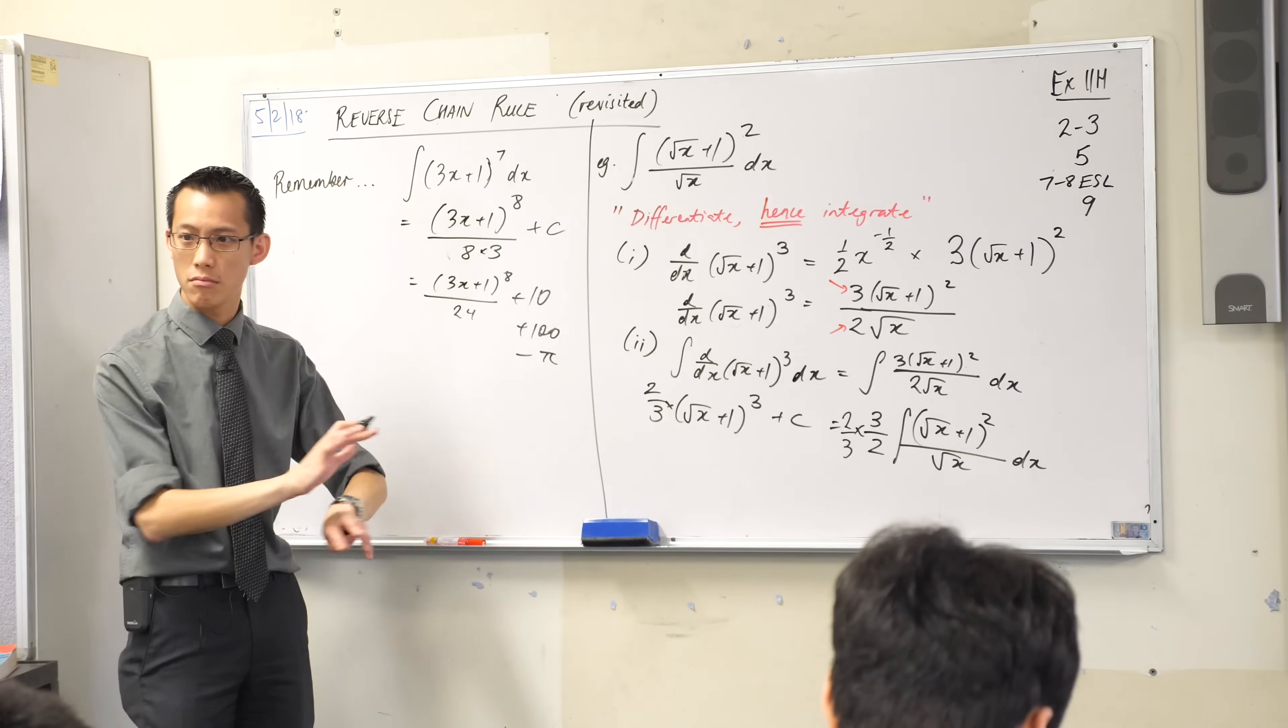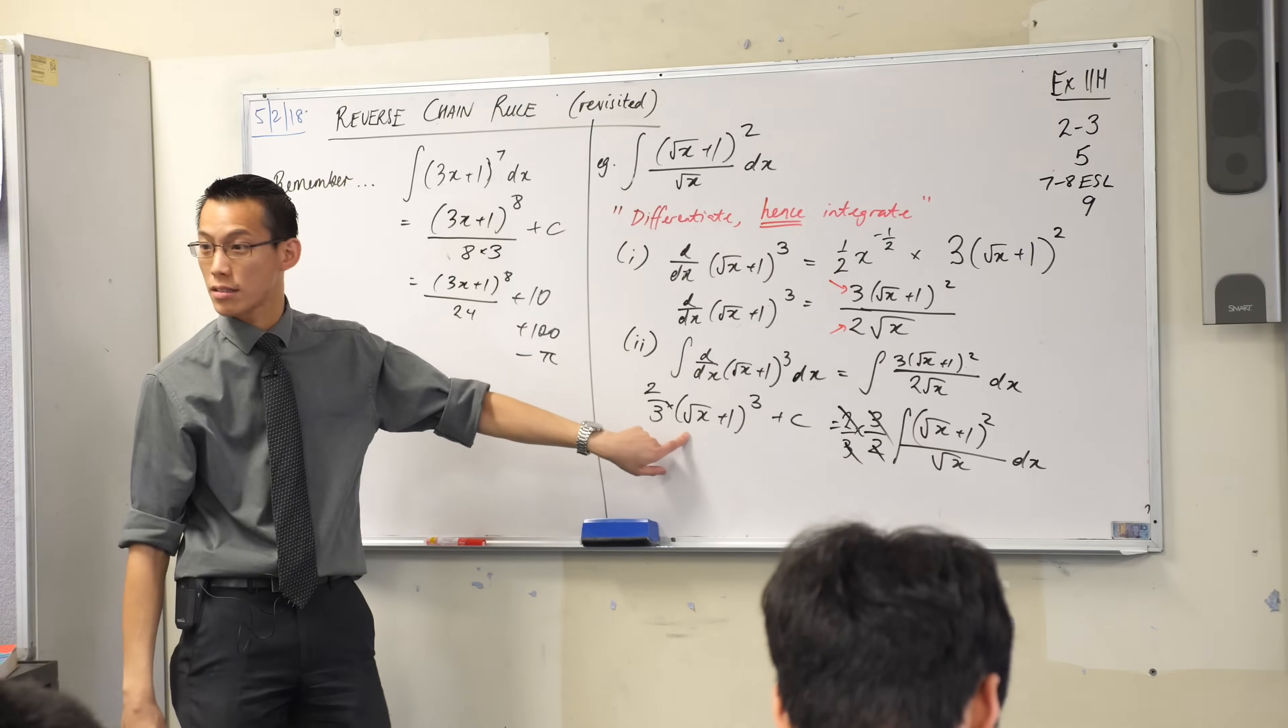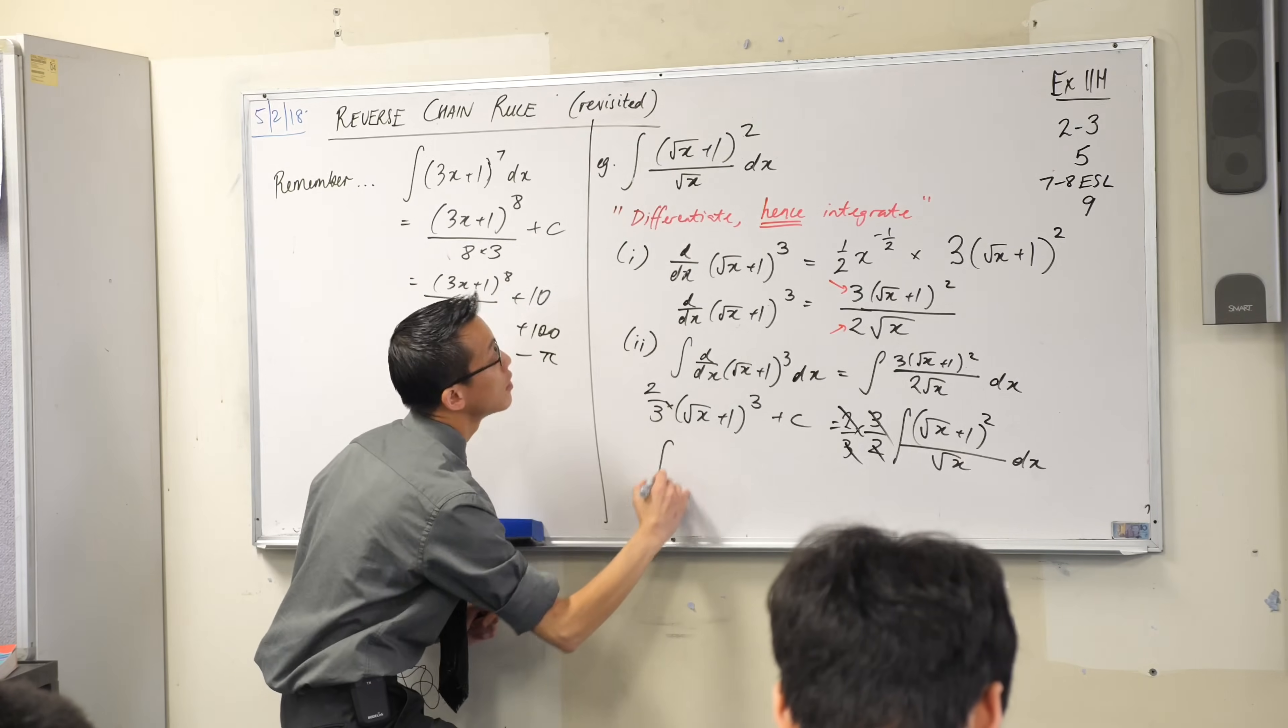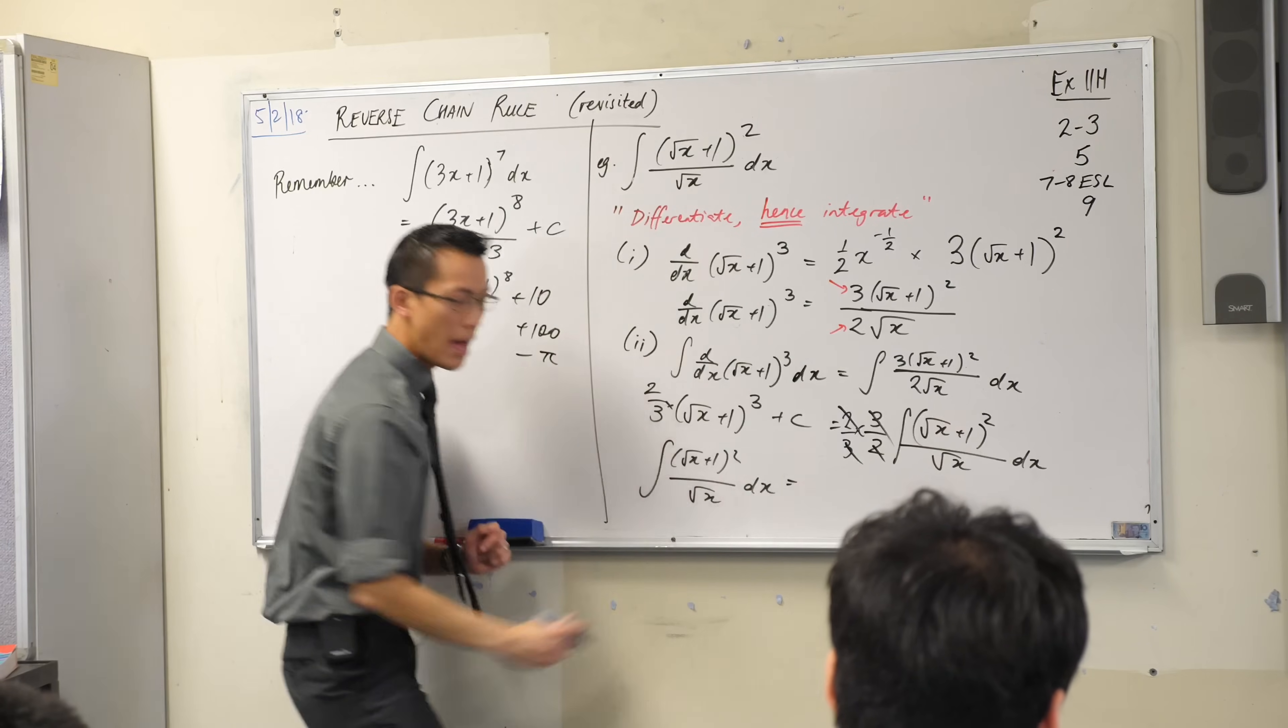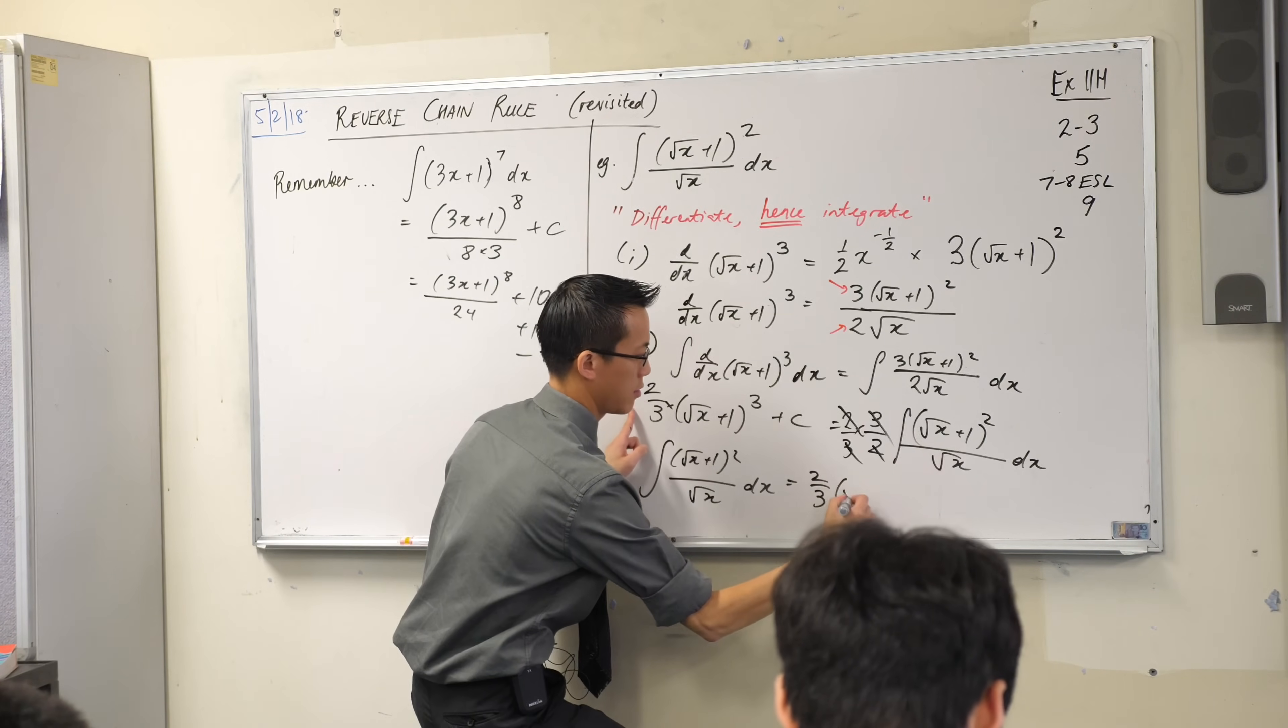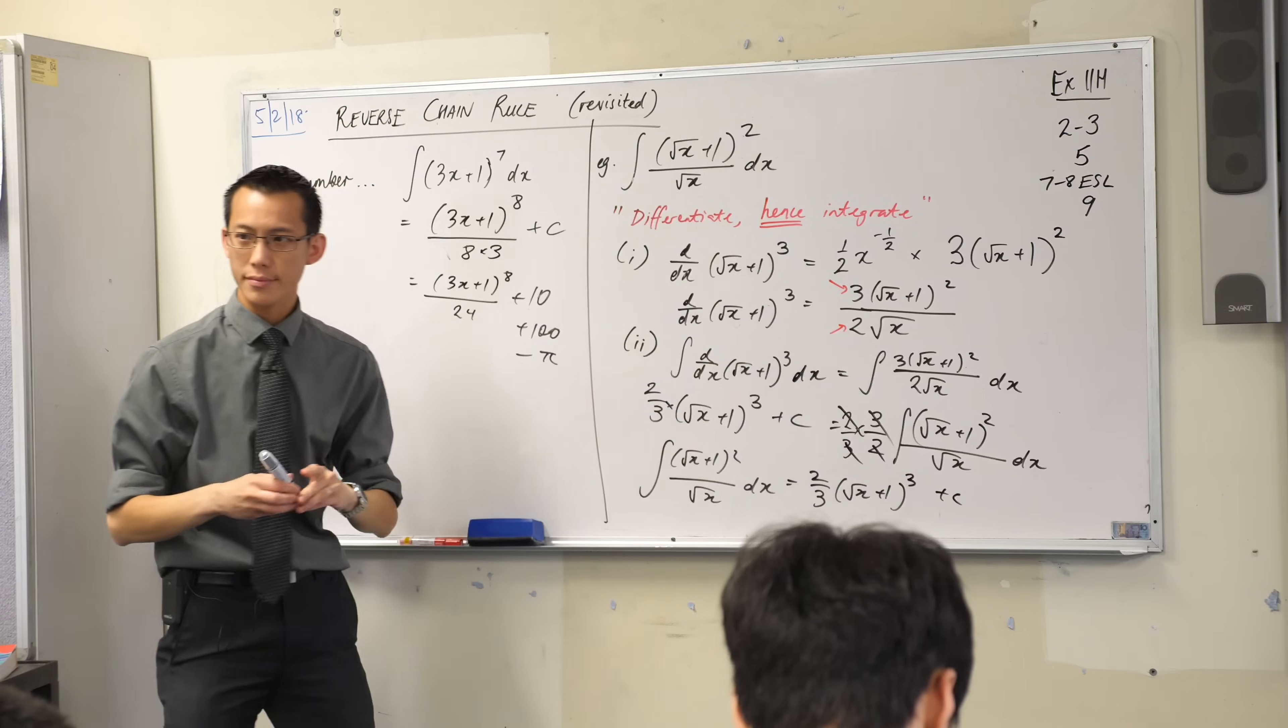You okay with that? Look alright? Cancel, cancel, cancel, cancel. Really, this is it. Right? So I guess I should tidy everything up. The original question, integral of, etc, etc. And then what you end up with is this: 2 thirds square root plus 2. Okay.